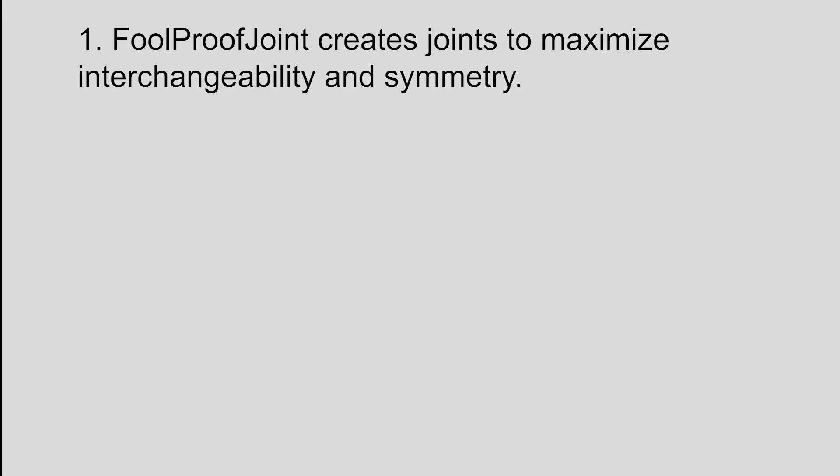FoolProofJoint is a two-step algorithm. FoolProofJoint creates joints to maximize interchangeability and symmetry by comparing envelopes of pieces. Envelopes are the shapes of pieces without joints.